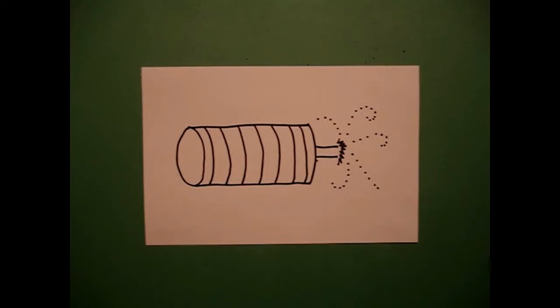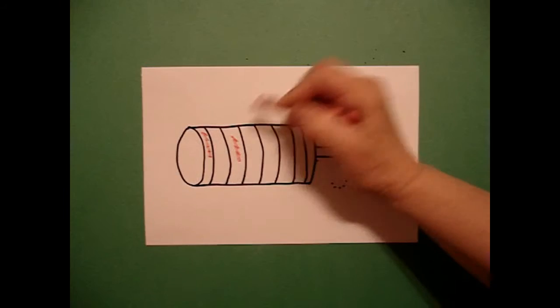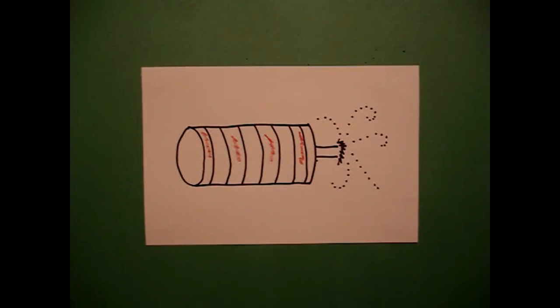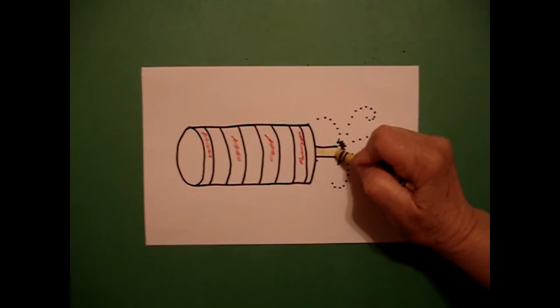Okay, now we're ready to color. This is super easy to color because all I'm going to do is red and white stripes, and I'm just going to put a little bit of yellow on this part of the wick. That's all.